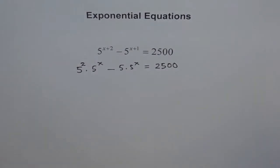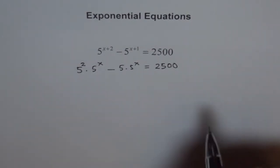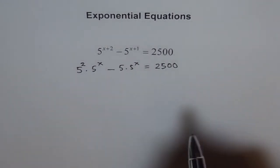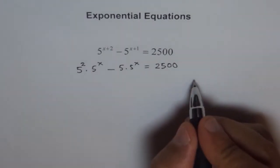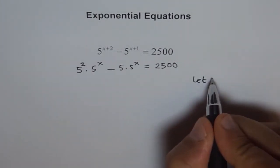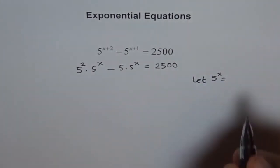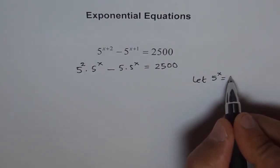We can write like this. Now let us substitute some variable for 5 to the power of x. So we say let 5 to the power of x equals to some number n.